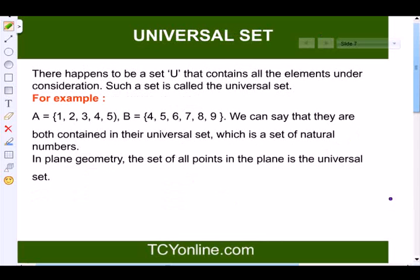Now after equal sets, let's talk about universal set. There happens to be a set U that contains all the elements under consideration, and such a set we call as a universal set. For example, there is a set A containing the elements right from 1 to 5, and there is another set B which contains the elements and numbers from 4 till 9. Now we can say that they are both contained in the universal set, which is a set of natural numbers only, because all these numbers are natural numbers. In plane geometry, the set of all the points in the plane is a universal set only.